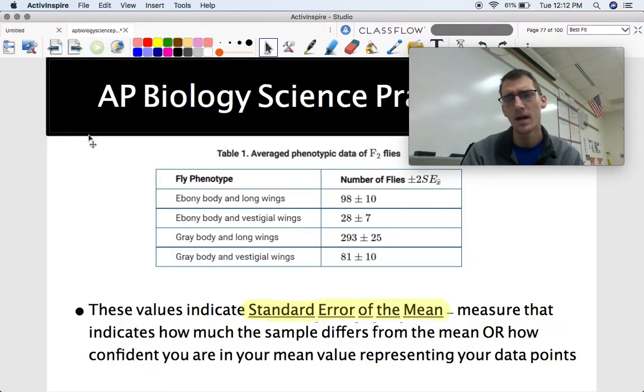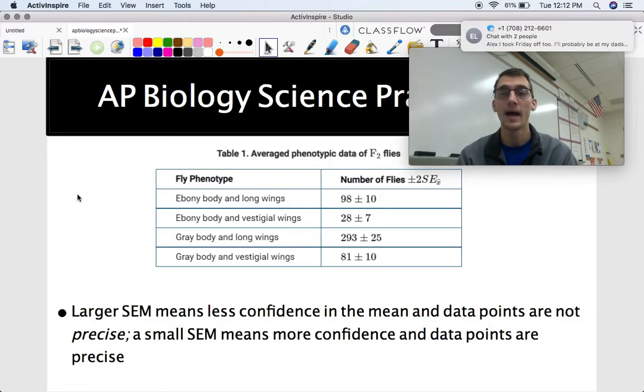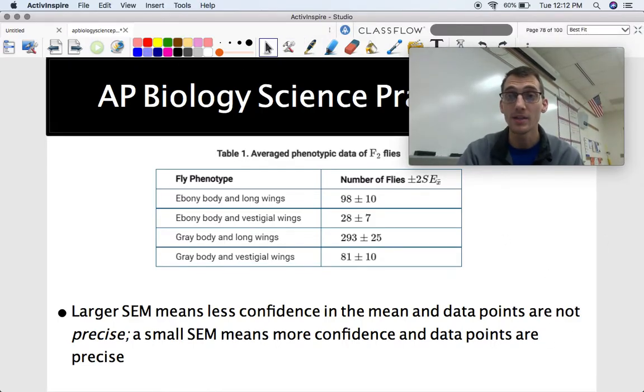That might not mean a whole lot right now, but when we run through an example and we're just going to calculate this on our own in a little bit, it'll start to make a lot more sense. So basically, the larger the standard error of the mean value that you have for a data point, the less confidence you have in the mean actually representing the average. So say for example, I am trying to collect the average shoe size of everybody in my AP Biology class.